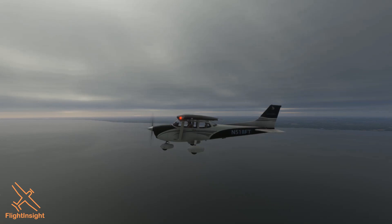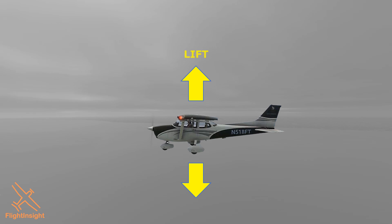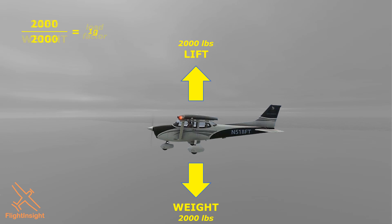Let's look at how stall speed, load factor, and angle of attack play a role in this. When we're in equilibrium, our lift equals our weight. So if our airplane weighs 2,000 pounds, we're producing 2,000 pounds of lift. The ratio of lift to weight, which we get by dividing lift by weight, gives us our load factor — the total load on an aircraft's structure as a multiple of its weight. At equilibrium, we have a load factor of 1, expressed as 1G, as in G-force.